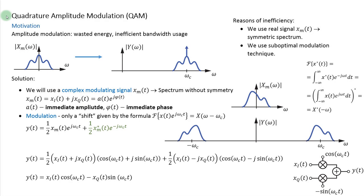Now I will tell you about a more advanced type: quadrature amplitude modulation, or QAM. QAM helps solve the problems of standard AM. Recall that if this was the magnitude spectrum of the modulating signal, the AM spectrum had two problems: a Dirac delta pulse carrying no information and wasted energy, and inefficient bandwidth usage — the same information was contained in both halves of the spectrum, so we were transmitting the same information twice using twice the necessary bandwidth.